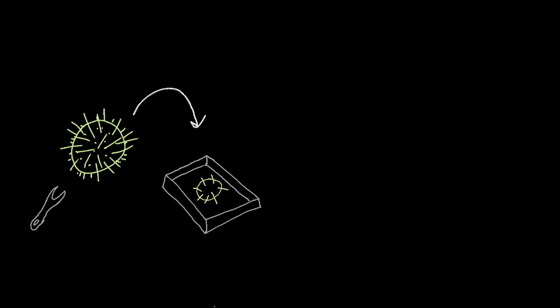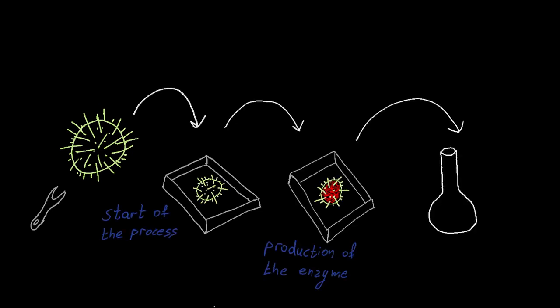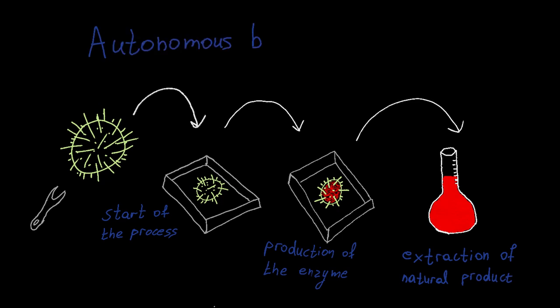Another goal is to engineer microbes to be completely autonomous. This means that they are programmed to produce all of the necessary enzymes and biofunctions in order to perform the complex multi-step production of natural products.